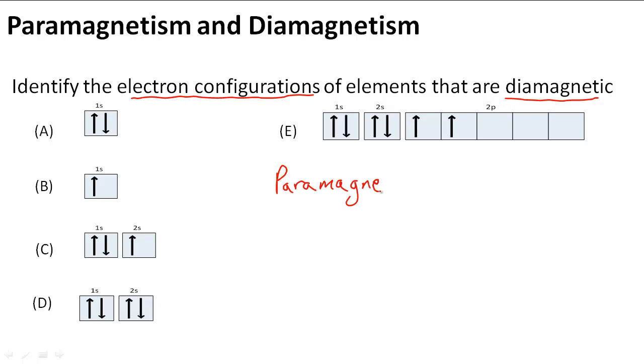Paramagnetism has to do with having net unpaired electrons. When we're talking about paramagnetism, we know that they have net unpaired parallel spins involved.